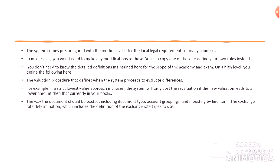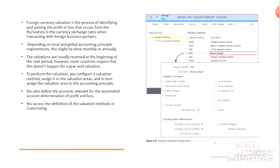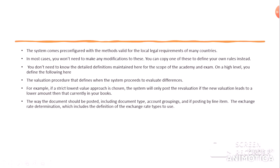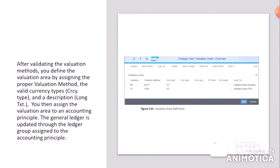With the strict lowest value approach, the revaluation is posted only if the calculated revaluation is less than the amount already registered in the books. The document posting includes document type, account groupings, and exchange rate determination with the definition of exchange rate types to use. After defining the valuation methods, you define the valuation area by assigning the proper valuation method, currency types, and description. The valuation method is then assigned to the valuation area.